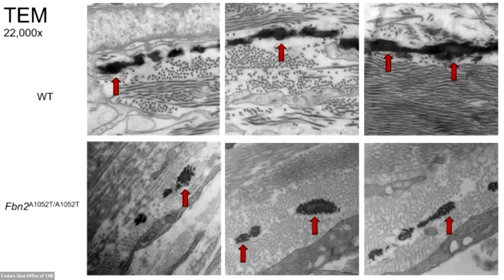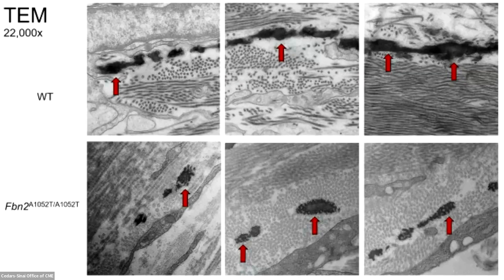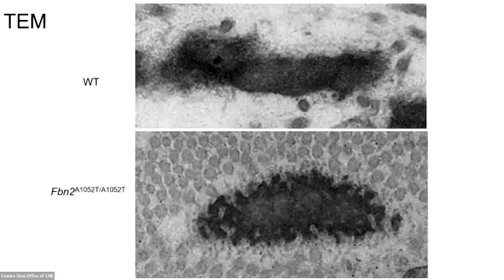An additional avenue we've undertaken is transmission electron microscopy, which allows us to look at the ultrastructure of the dura at very high magnification. One phenotype we begin to notice is the structure of elastin in the dura, which stains very darkly. In the wild type mice (top panels), the borders of elastin appear smooth and the center is completely filled in with tropoelastin. In contrast, in the fibrillin 2 mutant mice (bottom panels), the elastin has a moth-eaten appearance — the edges are not smooth and tropoelastin does not fill the inside completely. The significance of this finding remains to be elucidated.